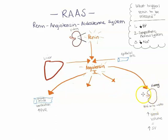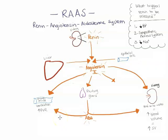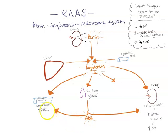Second, angiotensin II tells the kidneys to hold onto water, increasing blood volume and stroke volume, which elevates cardiac output and blood pressure. It also activates the pituitary gland in the brain to release antidiuretic hormone, ADH, which does the same two things — tells veins and arteries to constrict, increasing peripheral vascular resistance, and tells the kidneys to continue holding onto water. So we're doubling down on both vasoconstriction and fluid retention.